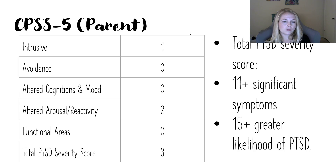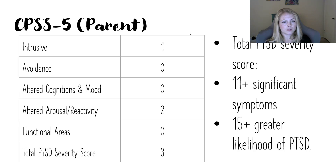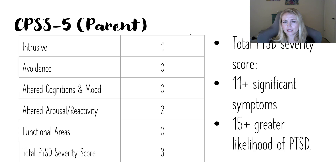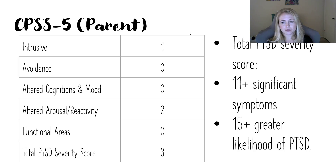The total severity score was 3. On this measure, 11 would be in a significant symptom range — mild to moderate — and 15 plus is really the cutoff for referring for full PTSD evaluation. So this kid had a few symptoms endorsed by the parent. We were not sure she completely understood this, as it was administered via interview in Spanish, so we wanted to get some collateral information. We also administered the Trauma Symptom Checklist for Young Children to the social worker.